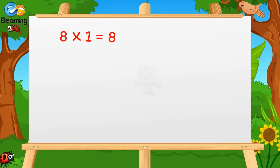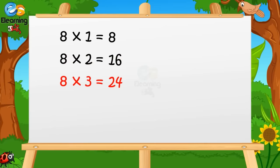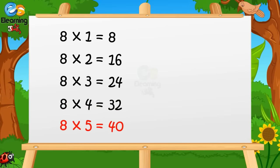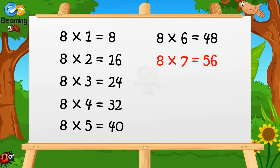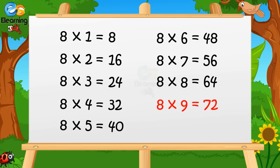8 ones are 8. 8 twos are 16. 8 threes are 24. 8 fours are 32. 8 fives are 40. 8 sixes are 48. 8 sevens are 56. 8 eights are 64. 8 nines are 72. 8 tens are 80.